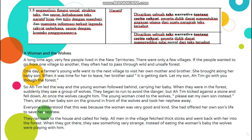Itu adalah tentang recount text. Selanjutnya, KD 3.8: Menganalisis fungsi sosial, struktur teks, dan unsur kebahasaan teks naratif lisan dan tulis dengan memberi dan meminta informasi terkait legenda rakyat sederhana sesuai dengan konteks penggunaannya. Materinya adalah naratif teks. Peserta didik dapat menentukan gagasan utama dari satu paragraf teks, dan dapat memprediksi nilai moral atau moral value yang ada di teks tersebut.